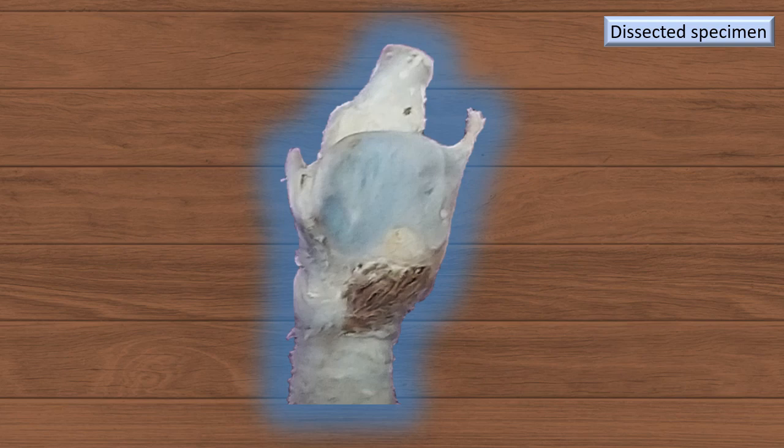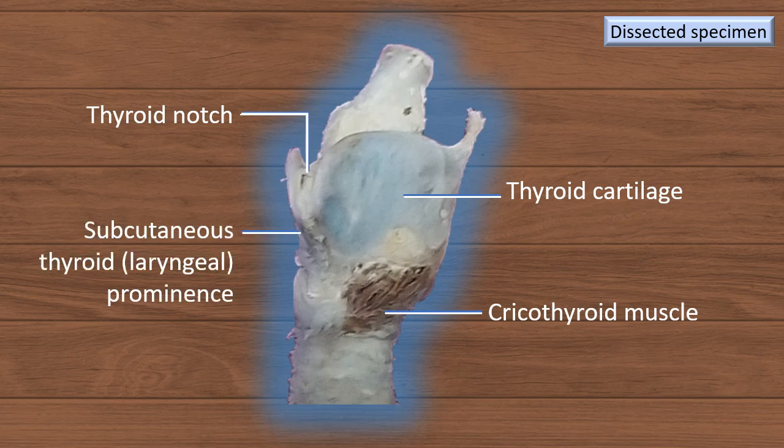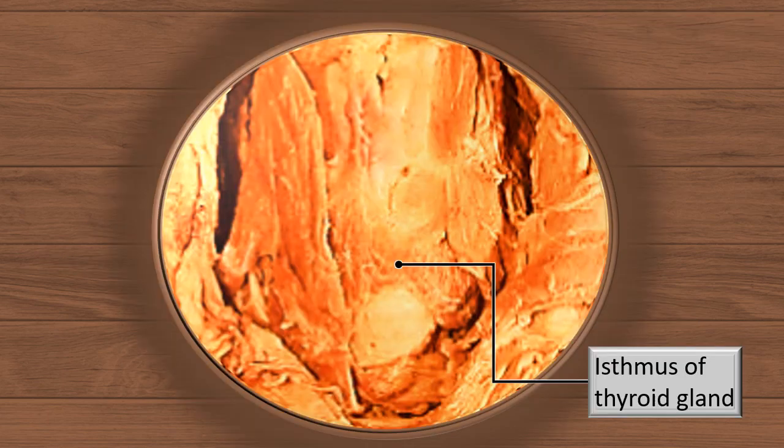This is another dissected specimen corresponding to the model where we will identify one or two additional points. That's the thyroid cartilage. That muscle running from the cricoid cartilage to the lower border of the thyroid cartilage is the cricothyroid muscle — a very important additional point. Although not in the midline, it is certainly in the vicinity of the dissection, so we will add this to the list. The thyroid notch and the laryngeal prominence — the prominent part of the notch is the laryngeal prominence.